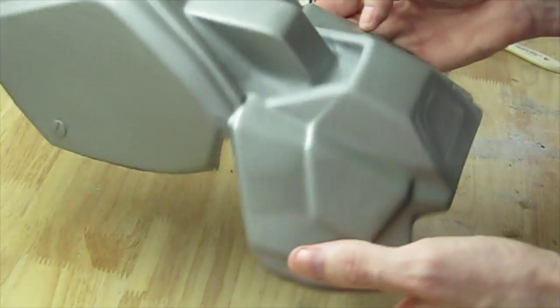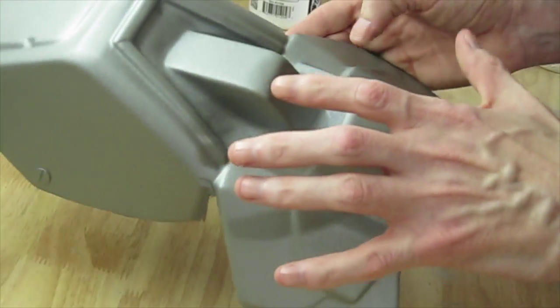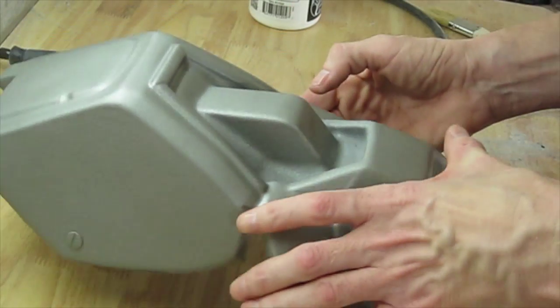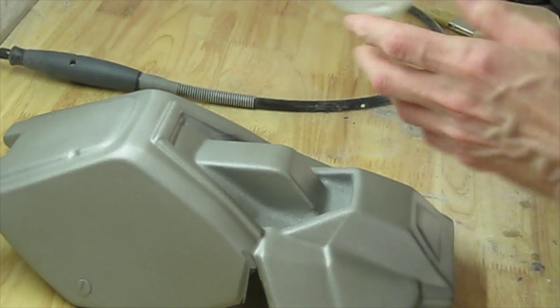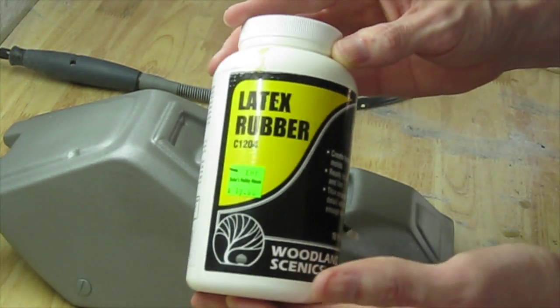Here I have my ODST shoulder pauldron. I primed it and then spray painted it with a silver metallic color. And now what I'm going to use is this Woodland Scenics latex rubber.